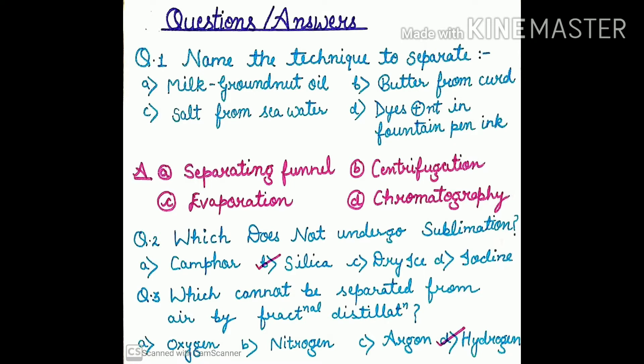Milk and groundnut oil are a combination of two immiscible liquids and we cannot mix them. So what do we use to separate them? We use the apparatus known as the separating funnel. If you haven't seen my previous videos, please check them — the link is in the description box — because without those you will not clearly understand the topic of separating funnel and immiscible liquids.